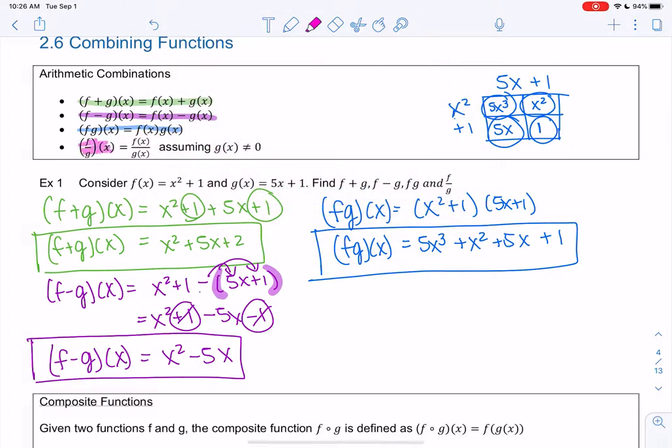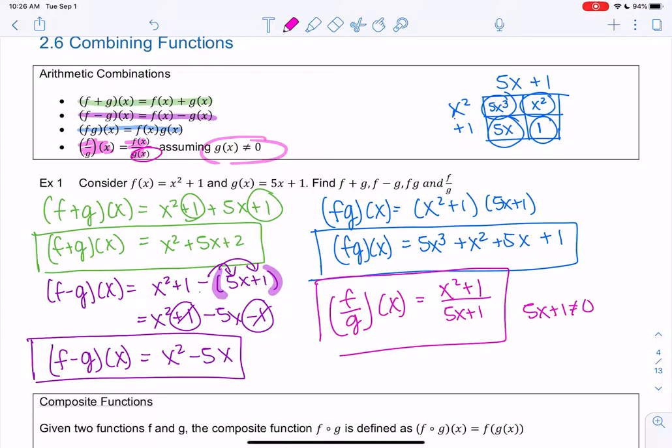And then the final one, f over g, division. You just do top divided by bottom, assuming g is not 0 because then it would be undefined. So f over g. F is x squared plus 1 over 5x plus 1. And then 5x plus 1 just can't equal 0 in this example. And then simplify if you can, but none of these simplify. And that was the arithmetic for functions.